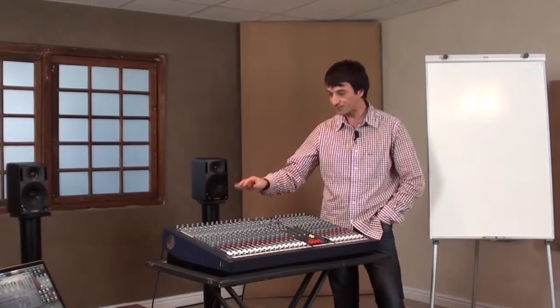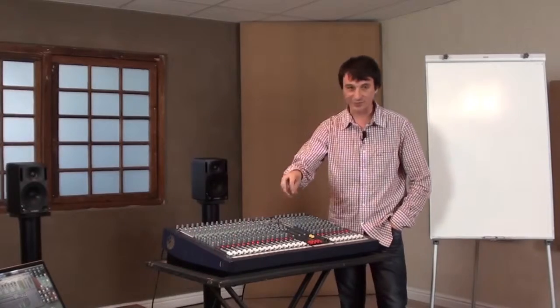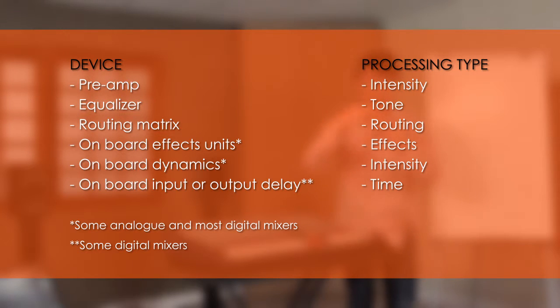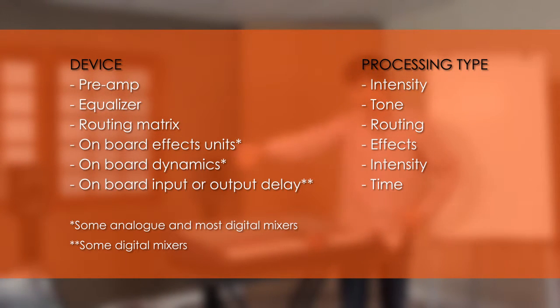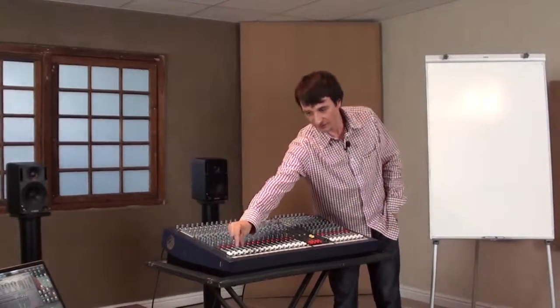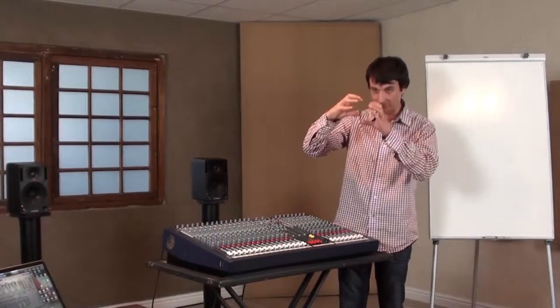Every mixer is made up of a number of devices. To understand this we take the channel strip and analyze each section — that's what we're going to do today. If you understand one channel strip you'll understand all of them, because it's the same thing repeated. In this mixer it's repeated 24 times, but once you understand one it's the same thing 24 times. You just need to understand the unit, and then you understand the whole.